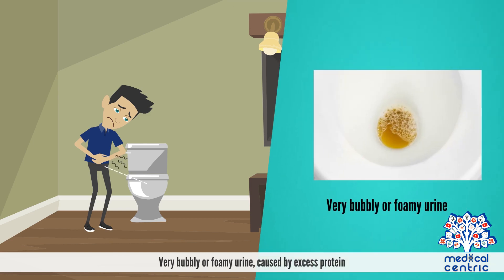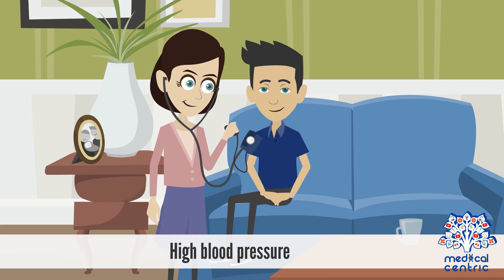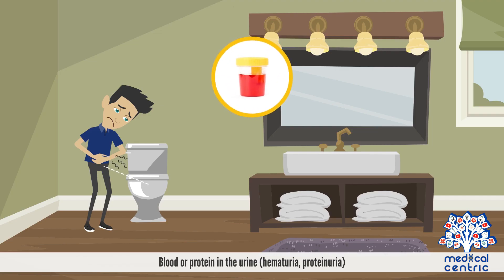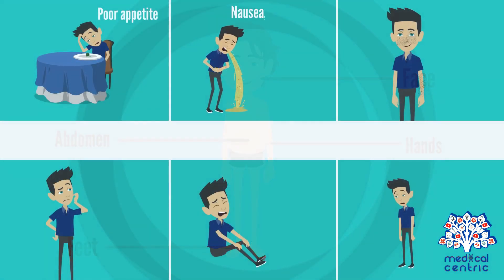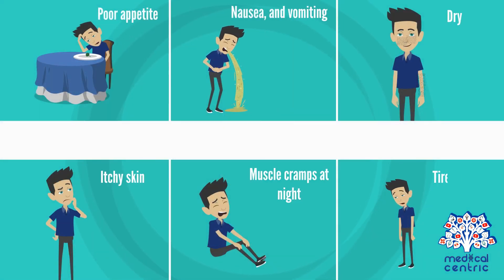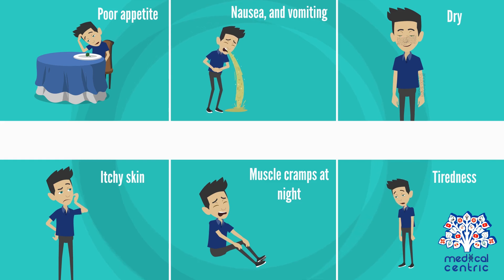High blood pressure is also a symptom of acute glomerulonephritis. Symptoms of chronic glomerulonephritis may include very bubbly or foamy urine caused by excess protein, urinating frequently during nighttime, high blood pressure, blood or protein in the urine (hematuria or proteinuria), swelling of the face, feet, hands, or abdomen, poor appetite, nausea and vomiting, dry and itchy skin, and muscle cramps at night. Tiredness may be associated with kidney failure.